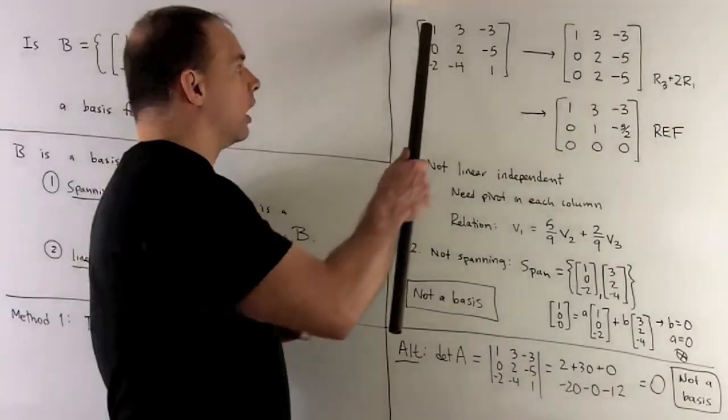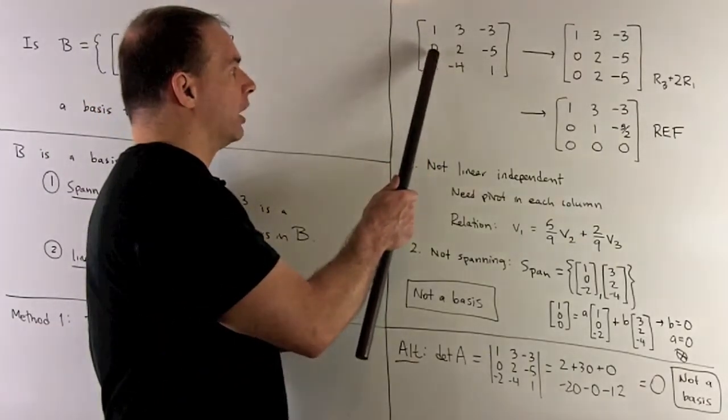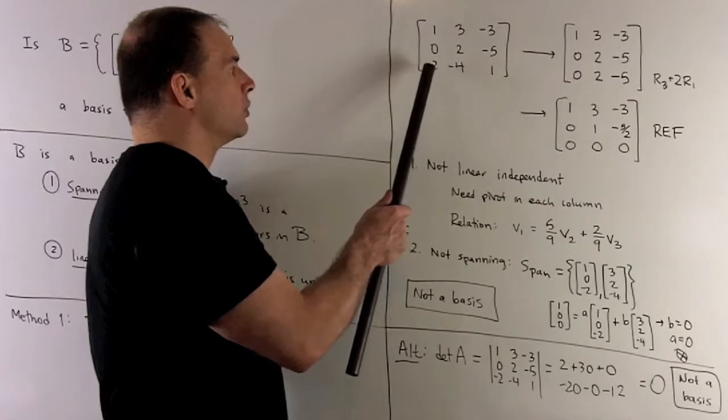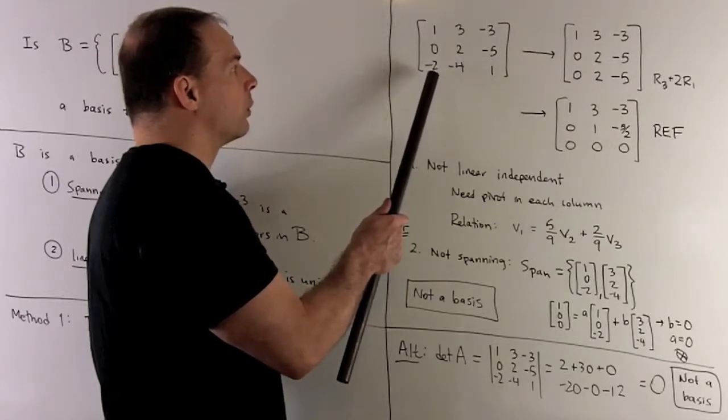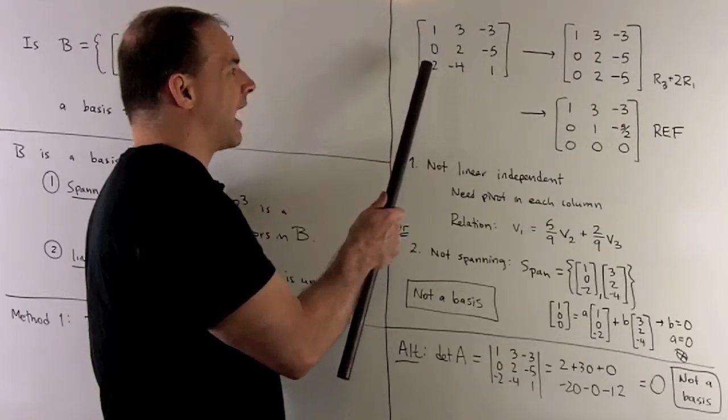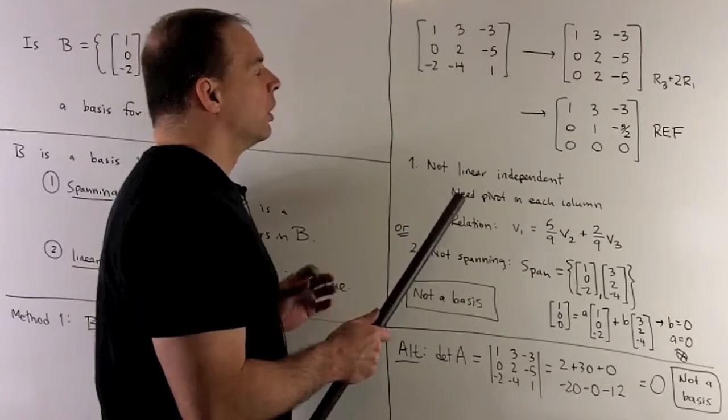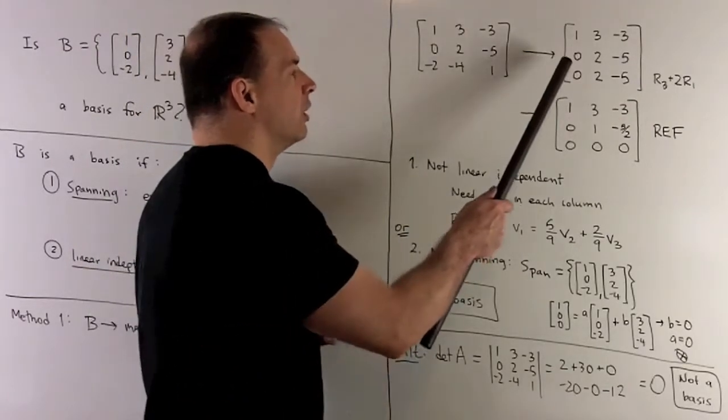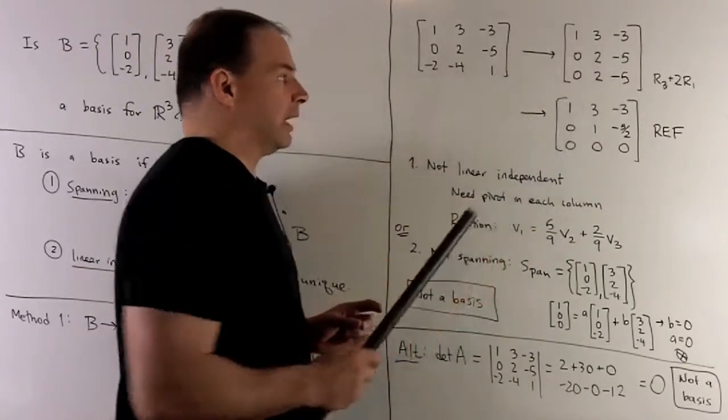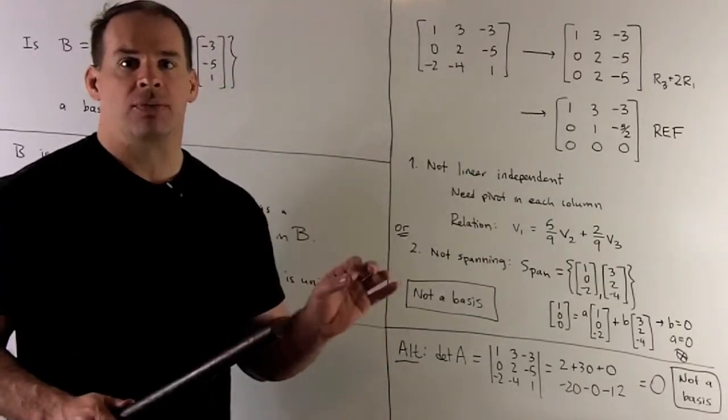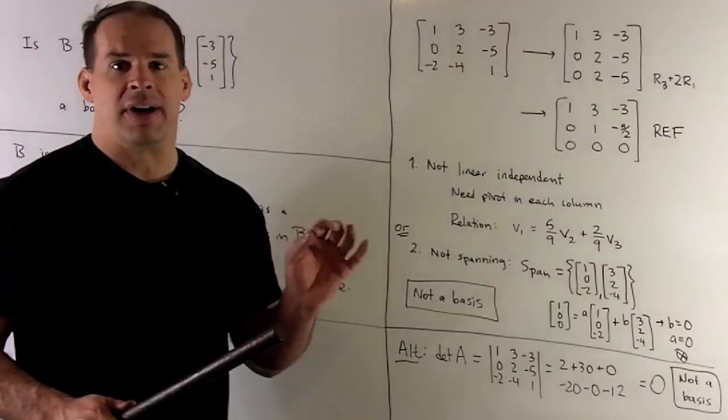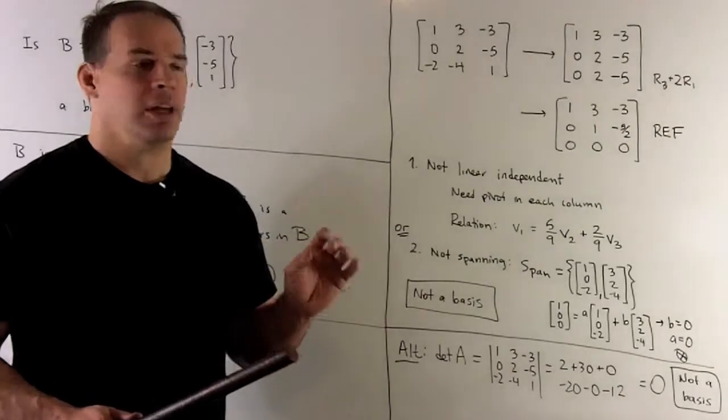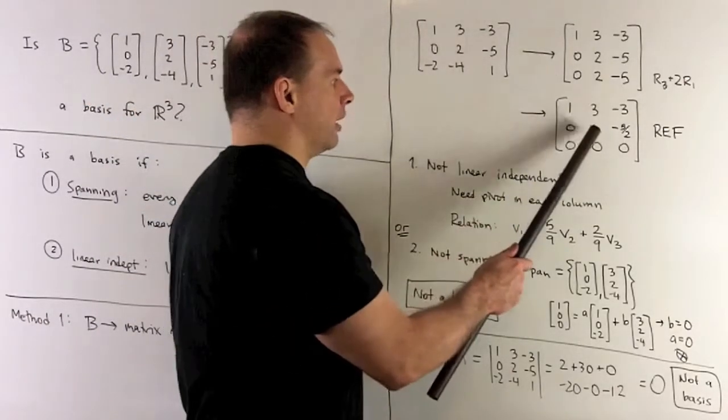We have a one here, which is good. To turn that minus two into a zero, we take twice row one and add it to row three. When we do that, row two and row three become equal. So we can cancel row three, making it a row of zeros. We'll divide row two by two to get our two pivots.